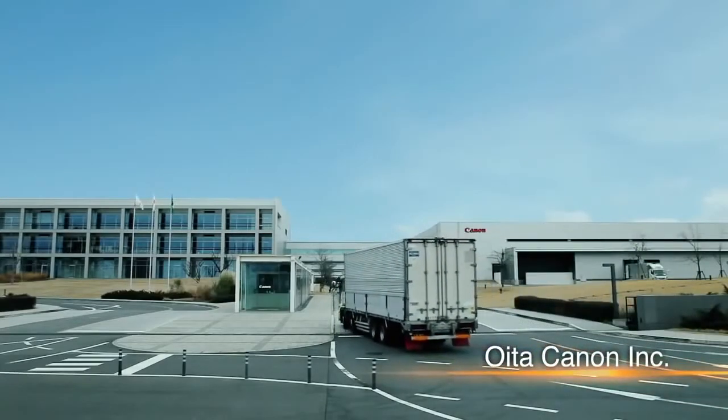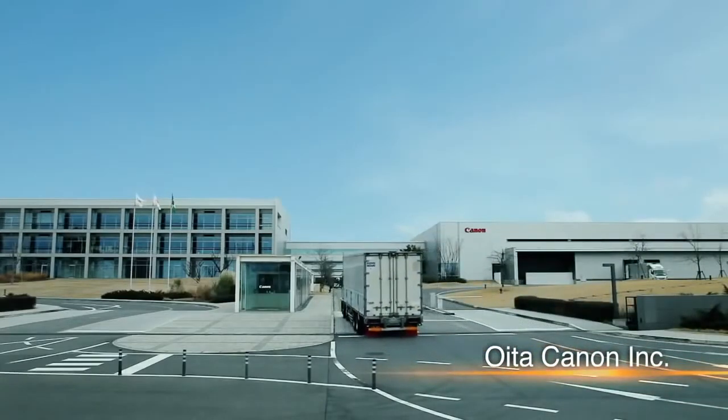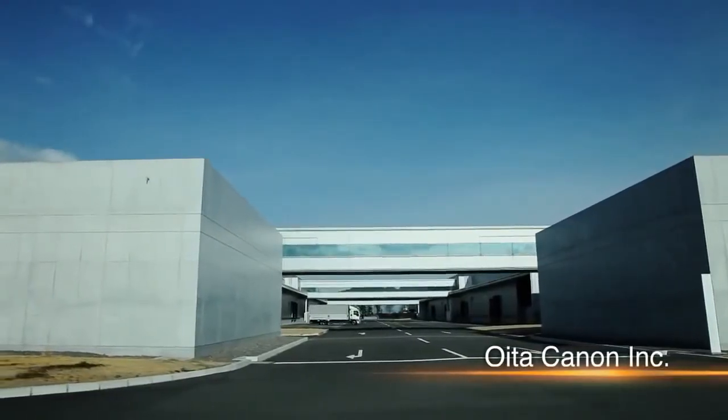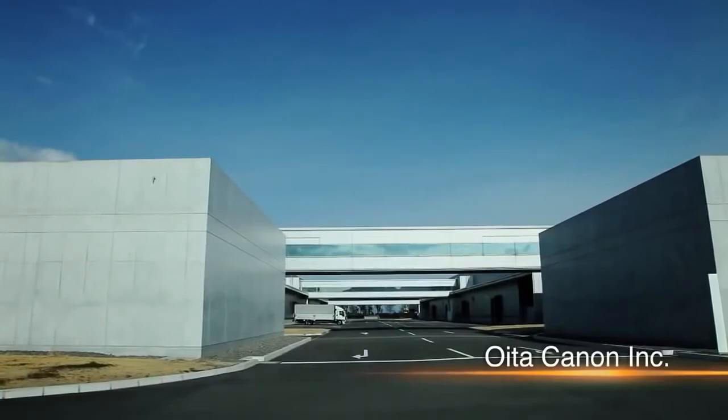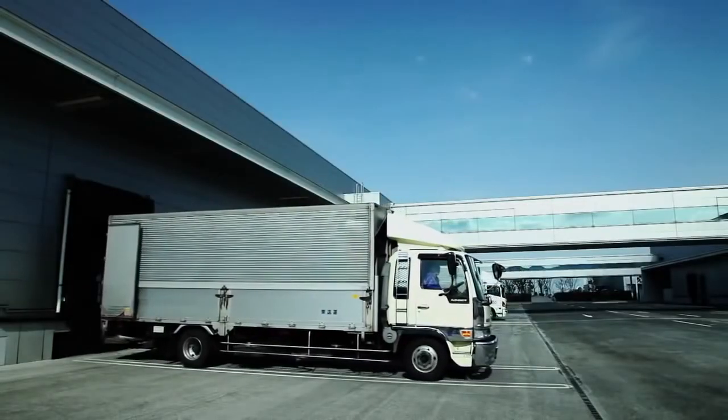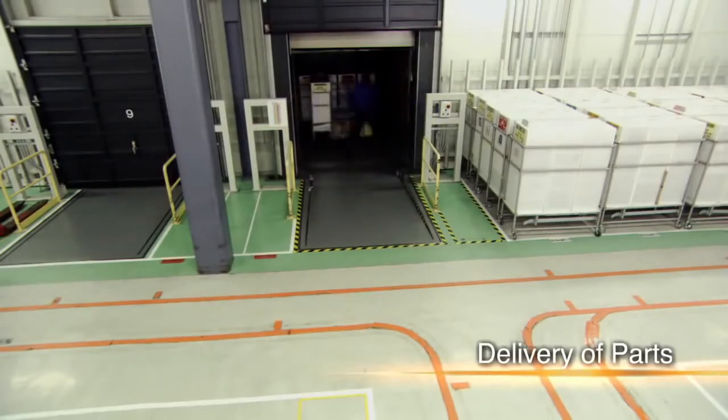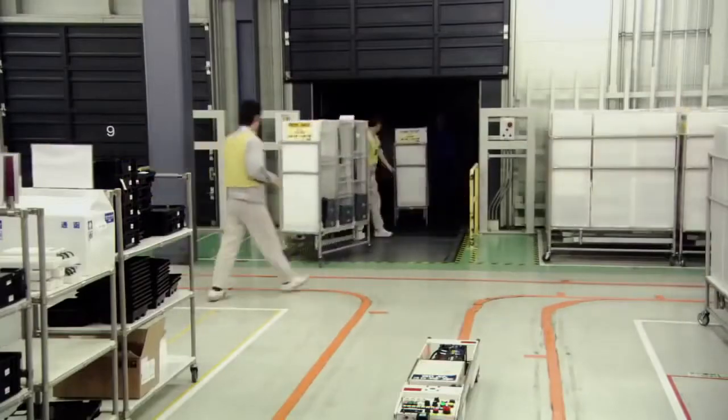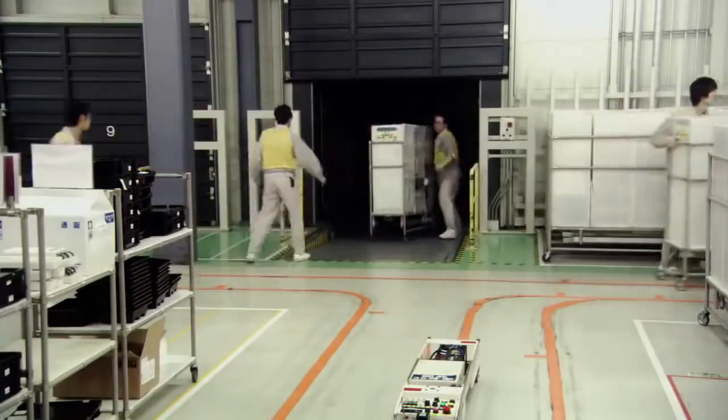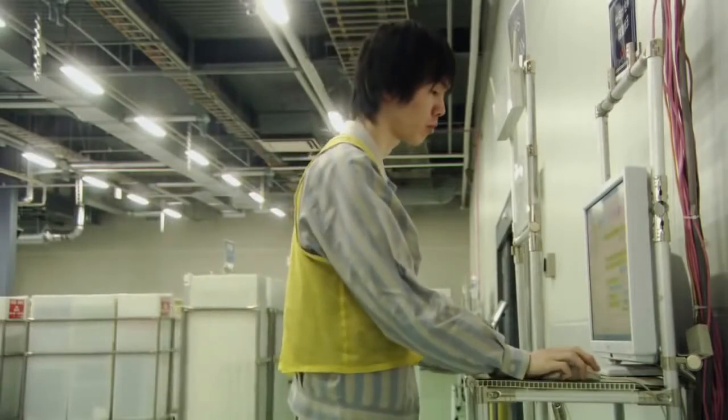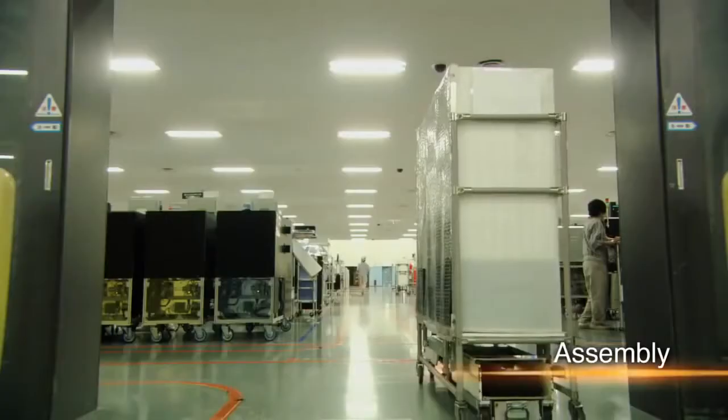Various camera parts, which have been developed and produced at different locations, are transported to this factory for assembly. Efficient production requires the delivery of a precise number of parts several times every working day. Each delivery arrives just in time for assembly. The production process is centrally managed, and progress can be confirmed from anywhere in the factory, a system that supports the smooth supply of parts.